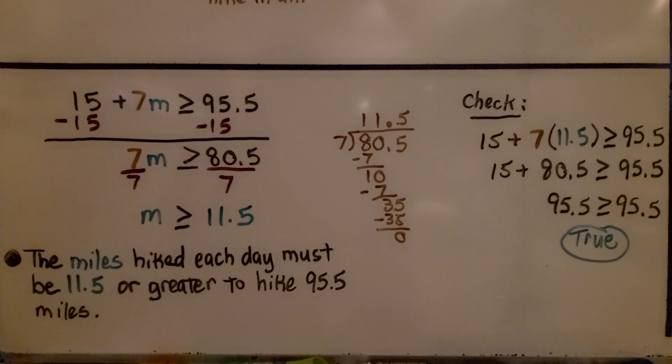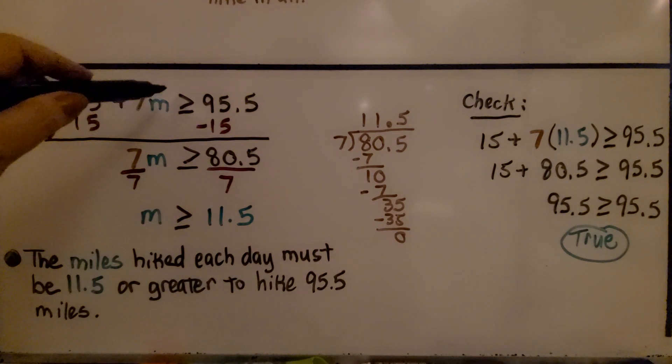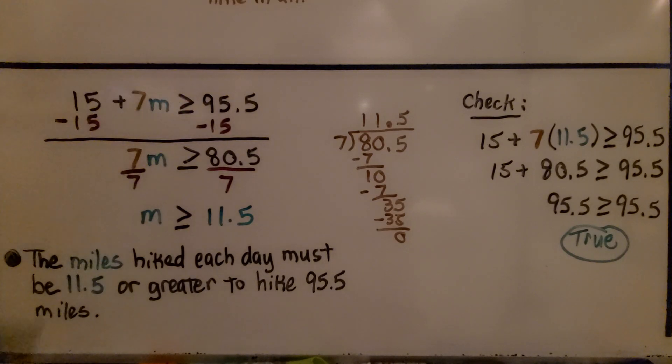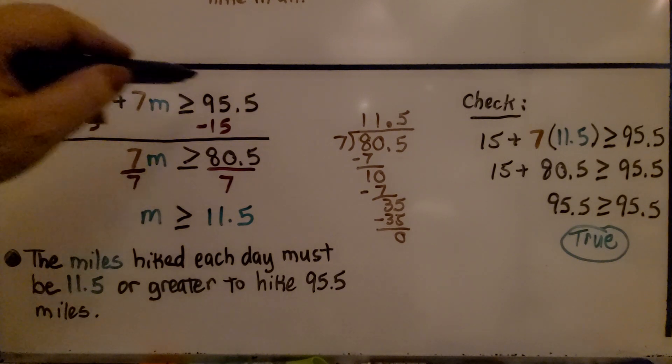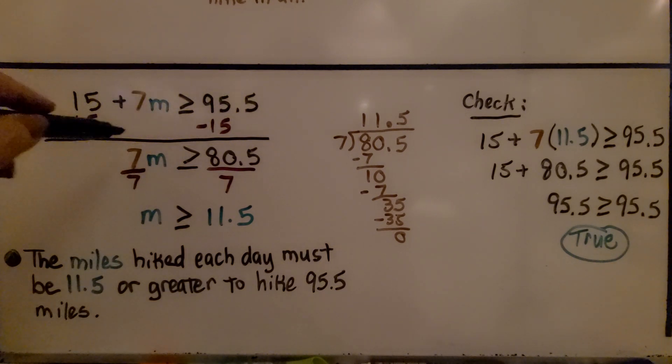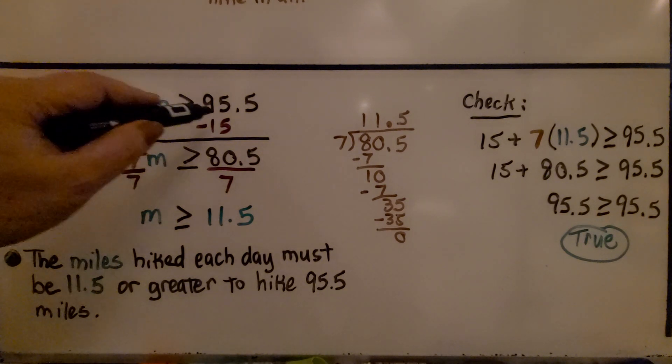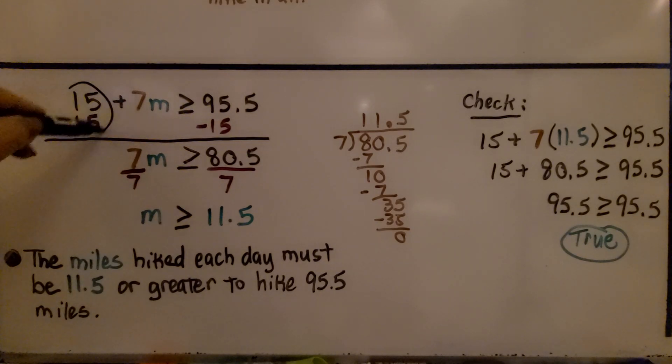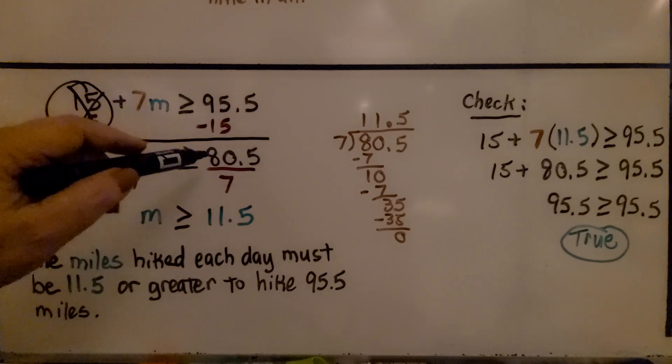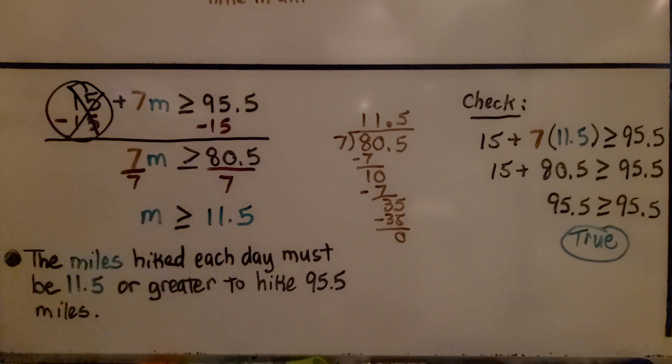We can actually solve and check this inequality. We have 15 plus seven M is greater than or equal to 95 and 5 tenths. We can see 15 is our constant. We can get rid of this positive 15 from each side of the inequality so that we can slowly isolate this M to one side. We do minus 15, minus 15, that creates a zero pair, and it's gone, it's eliminated. And on this side, we get 80 and 5 tenths.